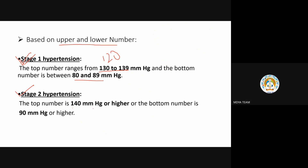Stage 2 hypertension — the top number is 140 or higher, and the bottom number is 90 or higher. This is a more severe stage.